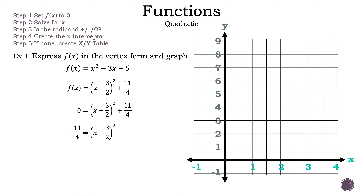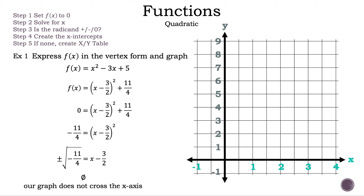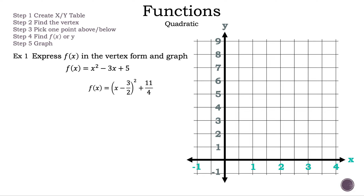Let's subtract 11 fourths on both sides. Now we can square root both sides. So we have plus or minus the square root of negative 11 fourths is equal to x minus 3 halves. We can stop here because we have a negative radicand, which means we don't have any real solutions. So our graph does not cross the x-axis. The next step is to create an xy table.